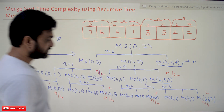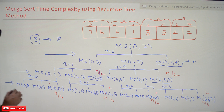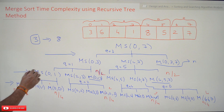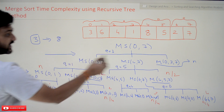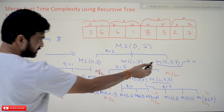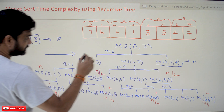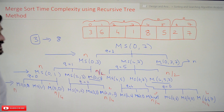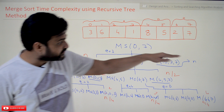If you sum up all the elements sorted at each level: at the bottom level, n/4 + n/4 + n/4 + n/4 = n elements total. At the middle level, n/2 + n/2 = n elements total. At the top level, there is a single merge call sorting n elements. So at each level, n elements are being sorted in total.